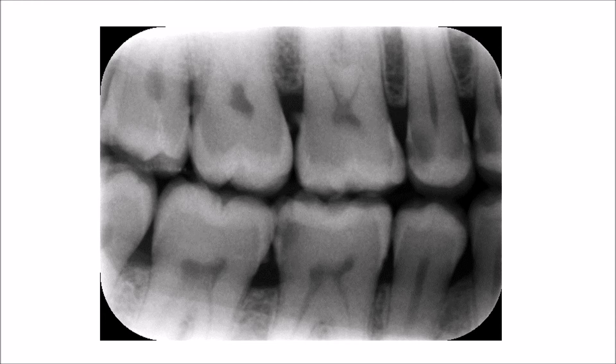The soft debris will start to calcify through the effects of calcium deposition from food and saliva. After calcification, they will harden and stick to the teeth, forming calculus deposits. Calculus deposits are very important in promoting periodontal disease.